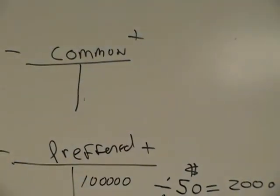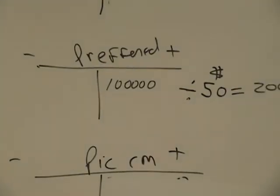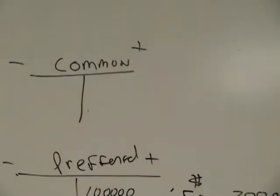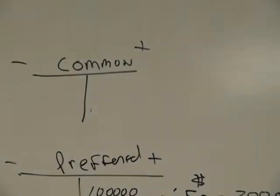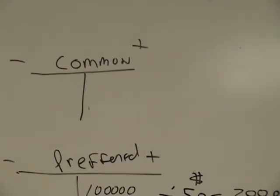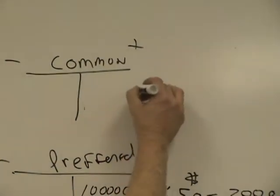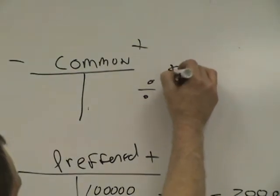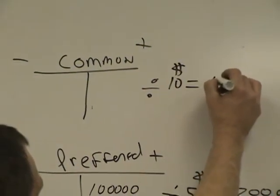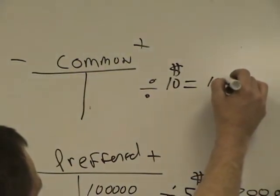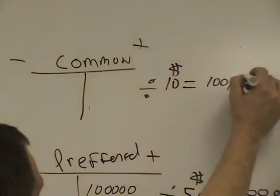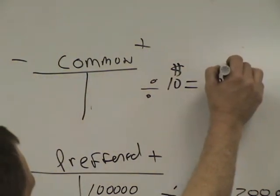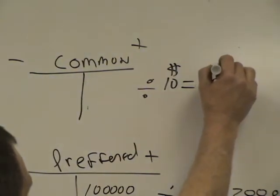And 100 shares of $10 par value common stock. 100 shares of $10 par value common stock. So 100 shares only? Oh, sorry. 100,000. 100,000.